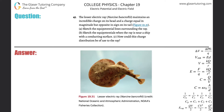Number 45: the lesser electric ray maintains an incredible charge on its head, and a charge equal in magnitude but opposite in sign on its tail. Let's assume that the head is very positive and the tail is going to be very negative.